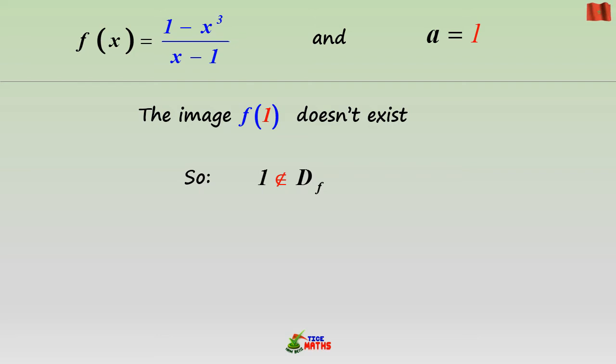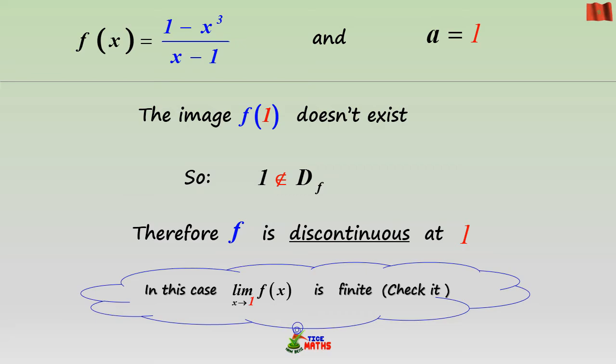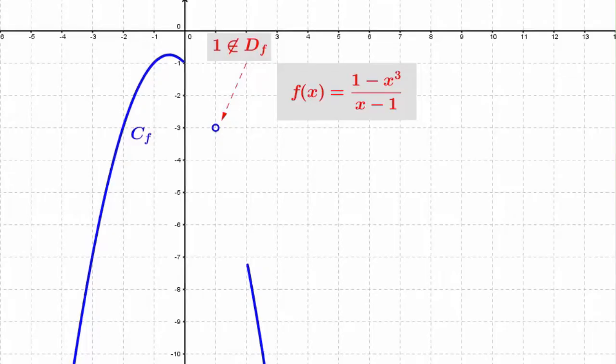In this case, the image of 1 doesn't exist. However, the limit at 1 is finite. That's why the graph presents a hole at 1.